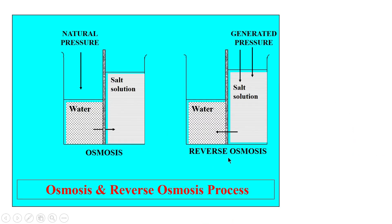Another method is reverse osmosis. In normal osmosis, if you have a salt solution and clean water separated by a membrane, the clean water passes through to the salt solution until the osmotic pressure of both equalizes. In reverse osmosis, pressure is applied to the salt solution side so that clean water passes through the membrane — hence the name reverse osmosis, the opposite of the osmosis process.